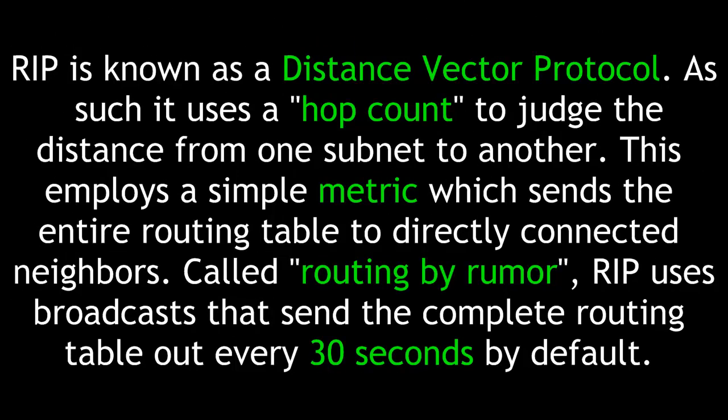RIP is known as a distance vector protocol. As such, it uses a hop count to judge the distance from one subnet to another. This employs a simple metric which sends the entire routing table to directly connected neighbors. Called Routing by Rumor, RIP uses broadcasts that send the complete routing table out every 30 seconds by default.